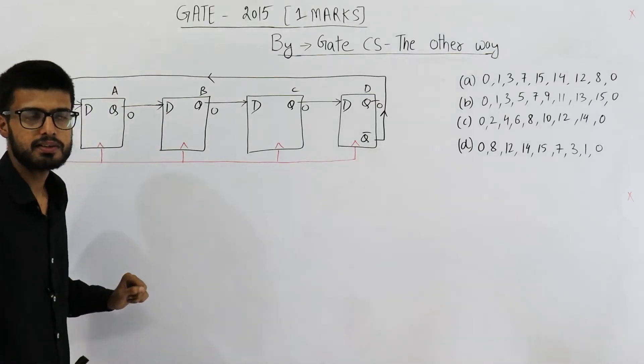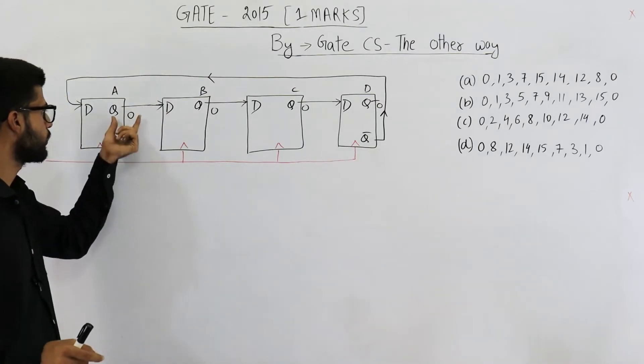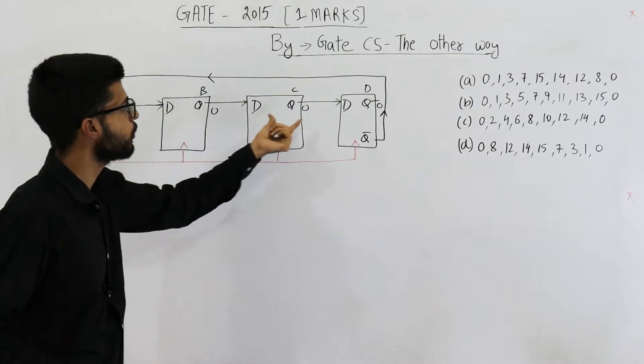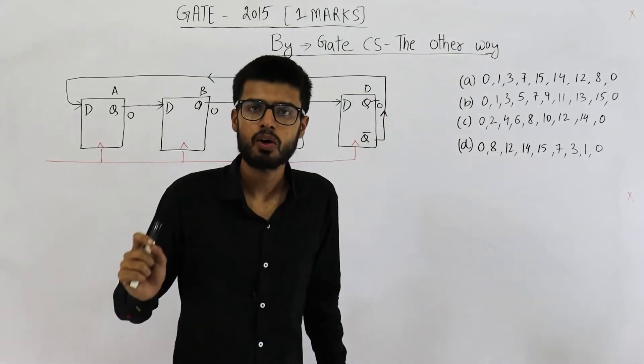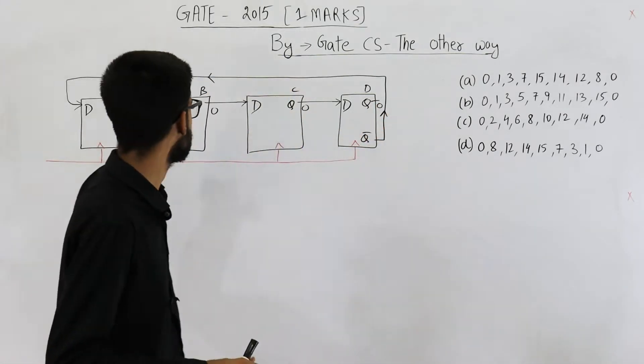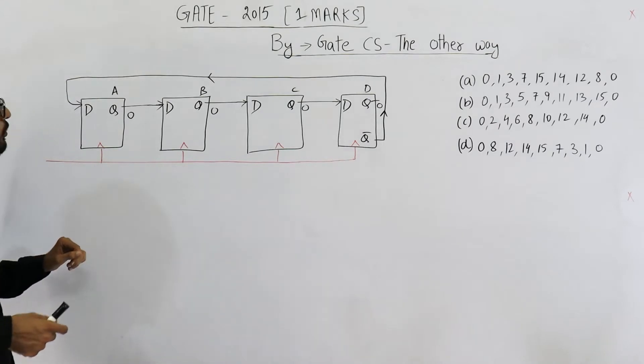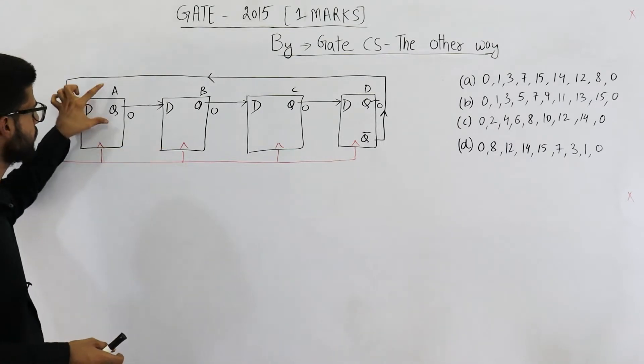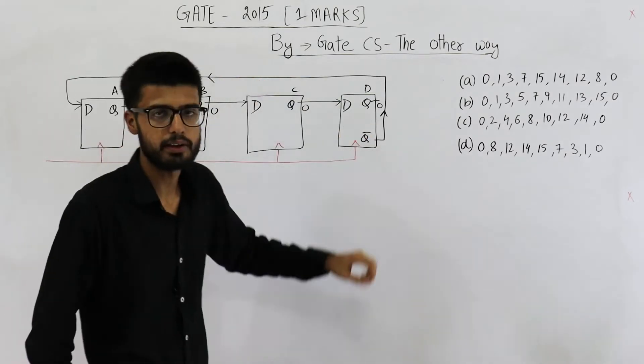Initial value of counter is given as 0000. So this output, this output, this one as well as this one, all are 0. I've written 0s here. Now just to distinguish between these outputs, let's call this one A, B, C, D.